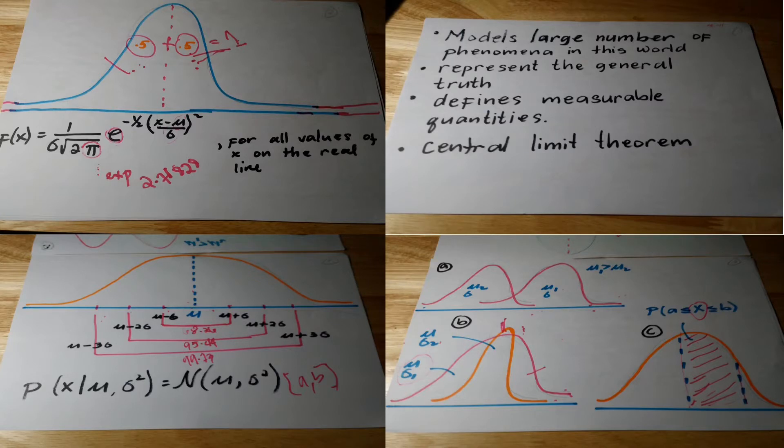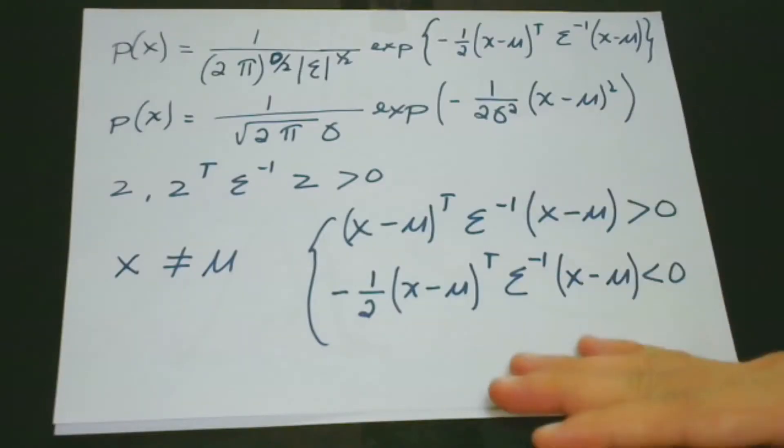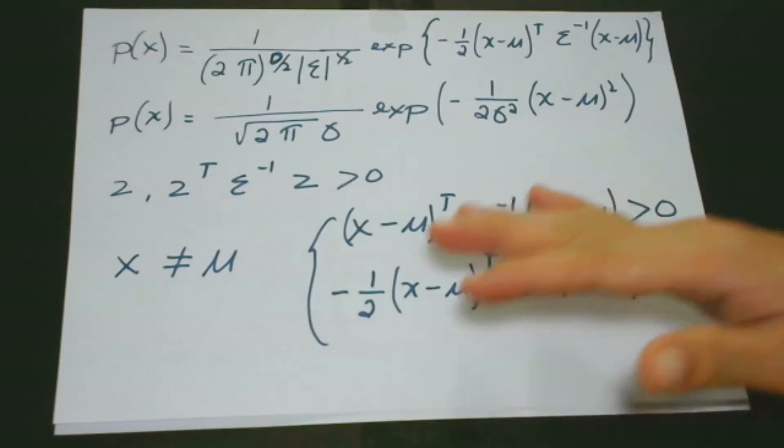If you missed lesson 11, you may pause this video and continue once you are done with lesson number 11. This makes lesson number 12 more exciting. In this session, we will learn about multivariate Gaussian.